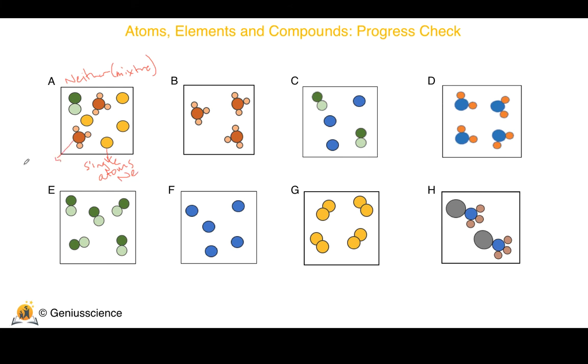Hopefully you recognise the compound with the red atom. That would be ammonia from the previous page, that 1 to 3 ratio of nitrogen to hydrogen.